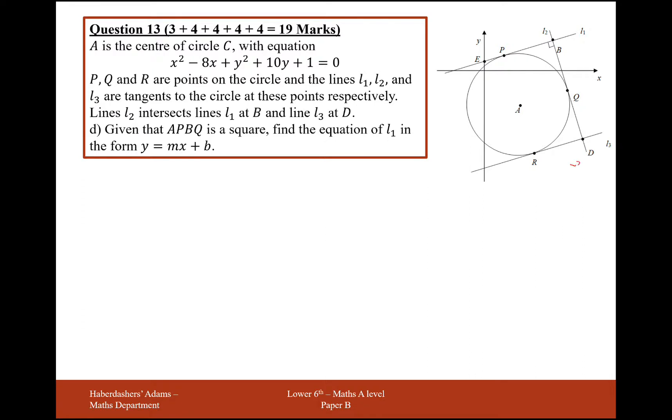So moving on to the next part. Given that APBQ is a square, find the equation of L1 in the form y equals mx plus b. So from the fact it's a square, I know that these two lines, PB and AQ, are going to be parallel. So I know my gradient is going to be a third. That was nice and easy. And I then need to find a coordinate that I can plug into that line there to work out b. I think it'd probably be easier to find P here.